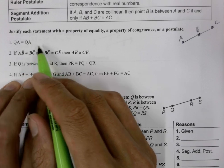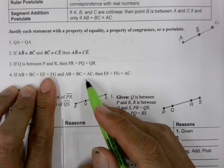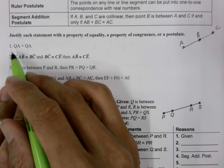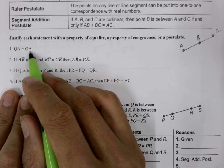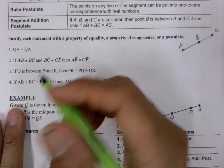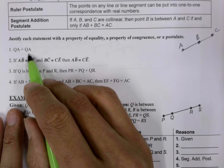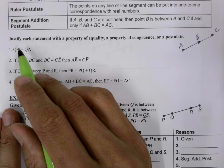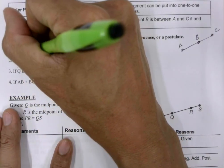Our first exercise is going to be to justify each of these statements. The first one is measure of QA is equal to measure of QA. If you think back on our algebraic properties, this is same number is equal to same number or same expression is equal to same expression. This is reflexive property.